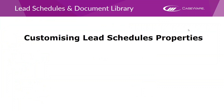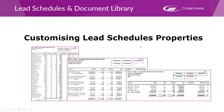Some people on the webinar have already had a look at and played around with some of the settings within these documents. From the lead schedules, we can simply create multiple different lead schedules and tailor them for our needs. We'll start looking at a trial balance. So if I go back into our file and scroll down to the end trial balance — 'end' is the reference for trial balance in Mercia — we can see our M1.1.